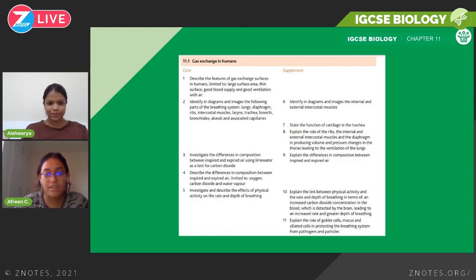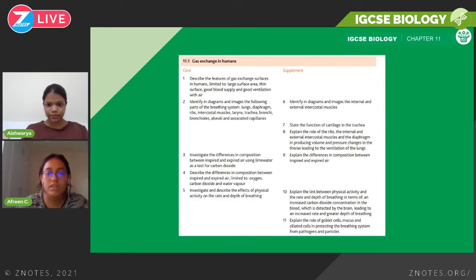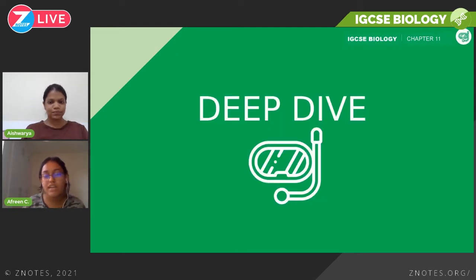To start off, we're going to look at the syllabus. We're going to describe some of the features of the human gas exchange system in mammals generally. Then we'll look at some diagrams and differentiate the different parts of the system. We'll look at the air composition we're breathing in and what we're exhaling, and then the effects of exercising on our breathing.